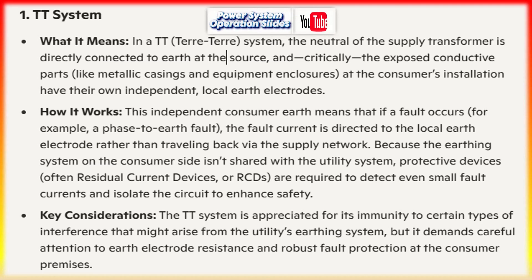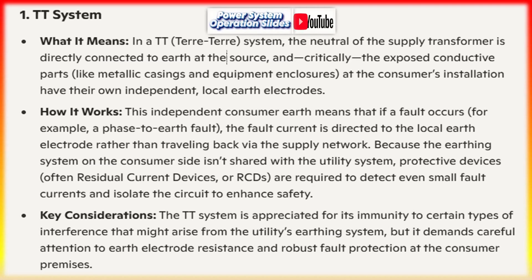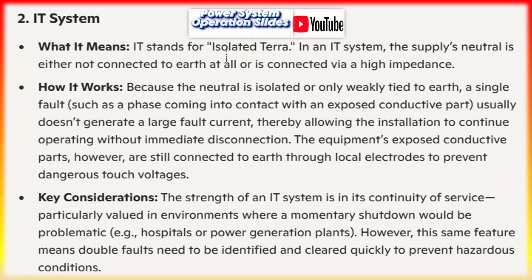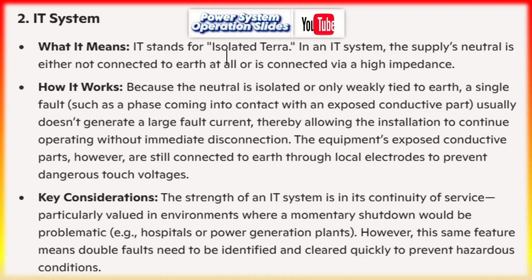IT system — what it means: IT stands for isolated terra. In an IT system, the supply's neutral is either not connected to earth at all, or is connected via a high impedance. How it works: because the neutral is isolated or only weakly tied to earth, a single fault such as a phase coming into contact with an exposed conductive part usually doesn't generate a large fault current, thereby allowing the installation to continue operating without immediate disconnection. The equipment's exposed conductive parts, however, are still connected to earth through local electrodes to prevent dangerous touch voltages.